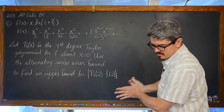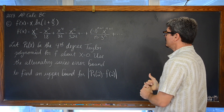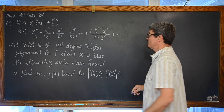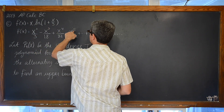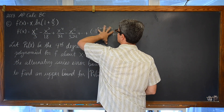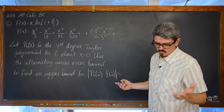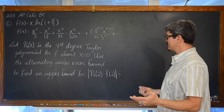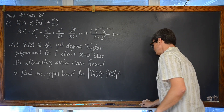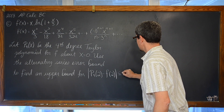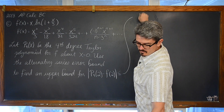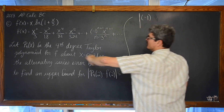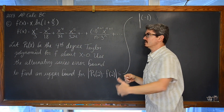So what we are going to do is look at the fact that this is less than or equal to — we are talking about the fourth degree Taylor polynomial that is alternating, so we just need to look at the fifth degree term. We are going to use this expression to find that fifth degree term.